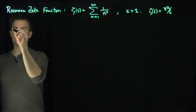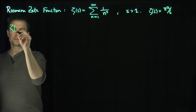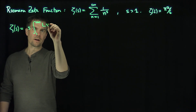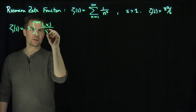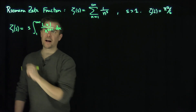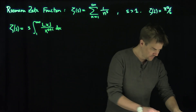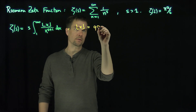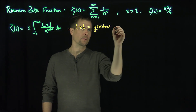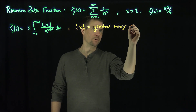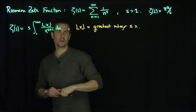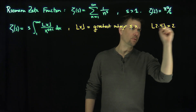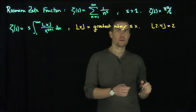What we're going to do now is prove the following: zeta of s equals s times the integral from 1 to infinity of the greatest integer less than or equal to x, divided by x to the s plus 1, dx. This function is the floor function — the greatest integer less than or equal to x. For example, the floor of 2.4 is equal to 2.